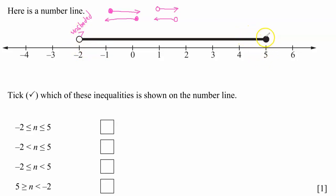So we see that the circle on five is shaded. So this tells us that the inequality symbol here has an equality sign. So it's either a less than or equal to or a greater than or equal to.